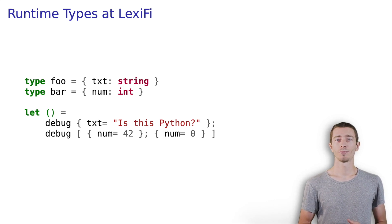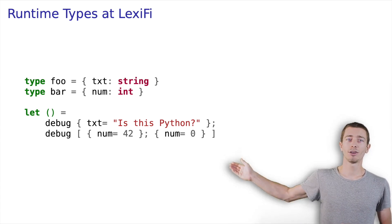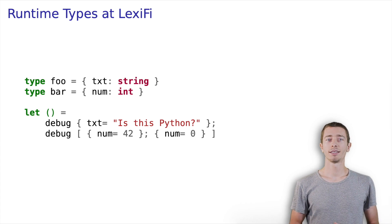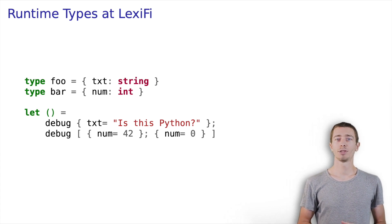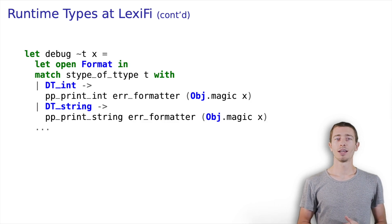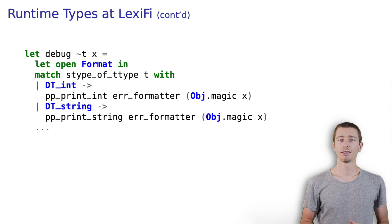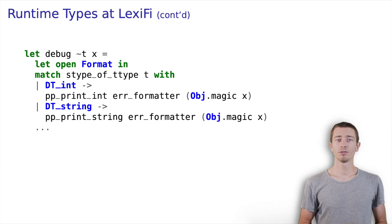Let's start from the beginning. This is what I saw on my first day at LexiFi. Certainly, something is off here. How can it be that this debug function is able to print values of any type? So I went on and had a look at the implementation of debug, only to become even more surprised. As you can see, the function matches on the type of the value to be printed.